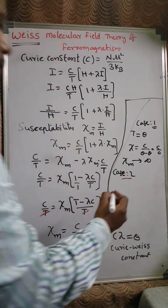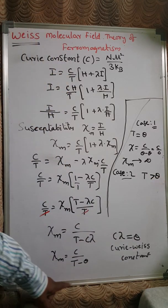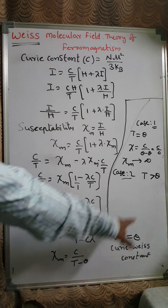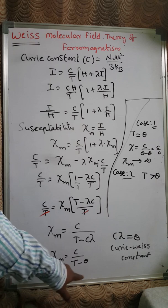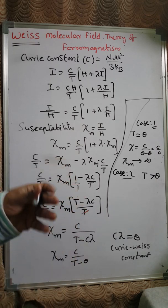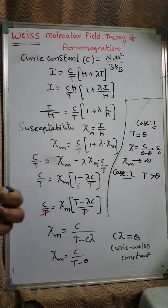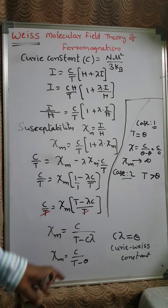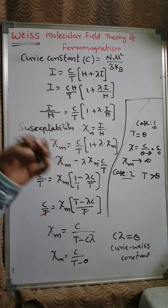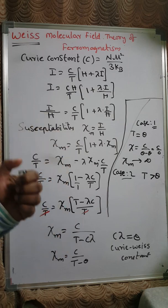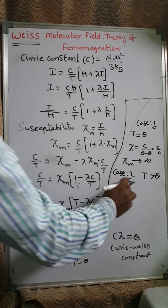Case 2: when T is greater than θ, the denominator (T − θ) is a positive value. In this case, thermal agitation opposes the alignment of internal molecular magnets. The temperature agitation opposes the alignment of molecular magnets, and the material becomes a paramagnetic substance.